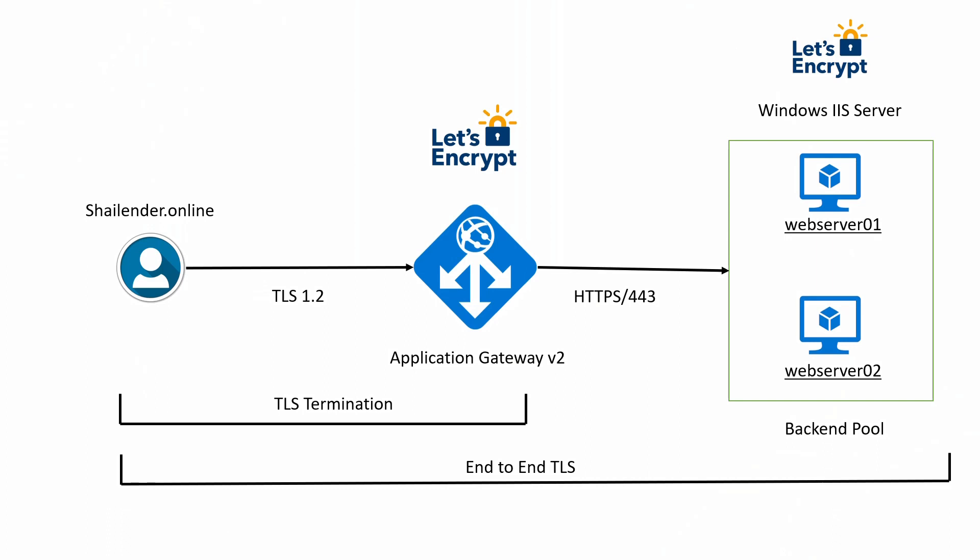If the traffic from user to the application gateway is encrypted, that is called TLS termination, but in TLS termination the traffic between application gateway and the web server is in clear text. In end-to-end TLS encryption, the data is encrypted from user all the way to the backend servers. We'll be using a Let's Encrypt CA signed certificate, and we need to set up the certificate both on the application gateway as well as the web servers, ensuring they are listening on port 443.